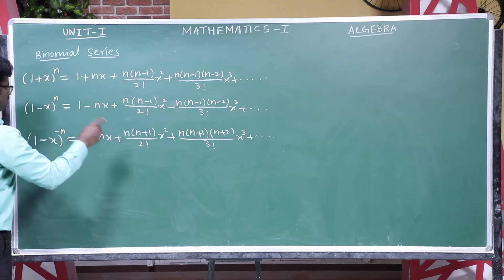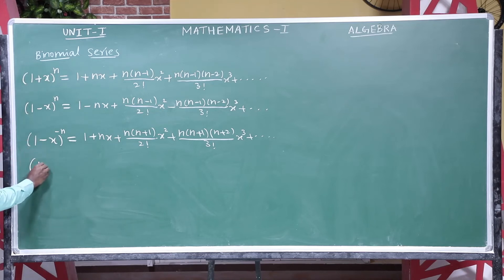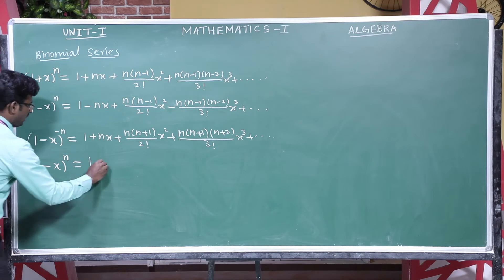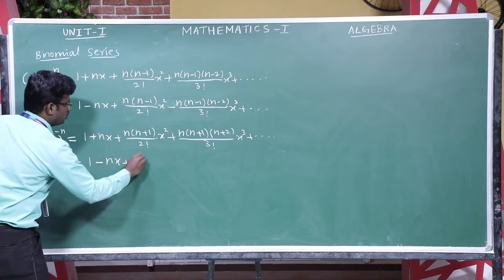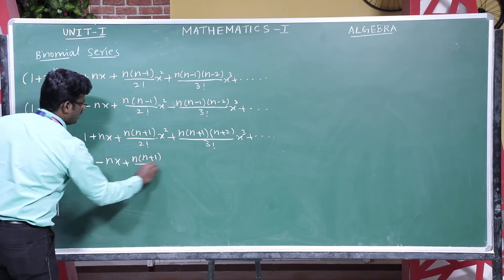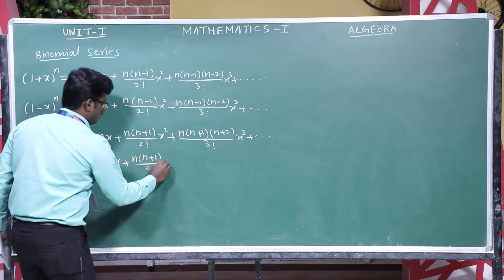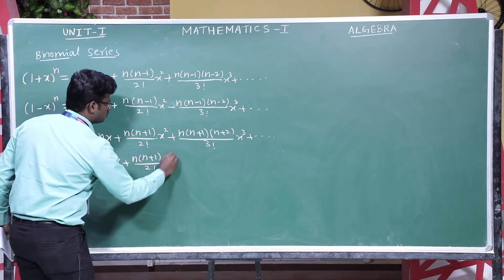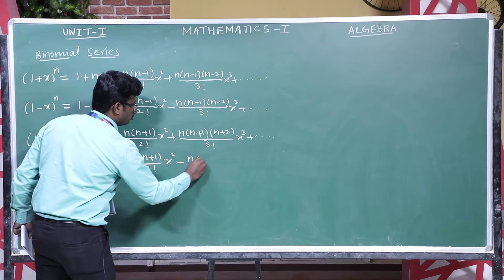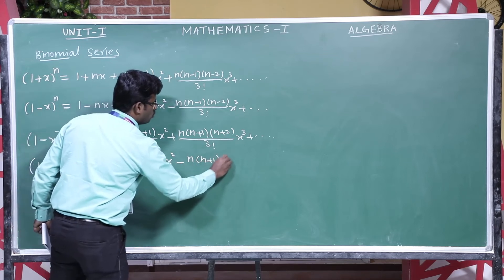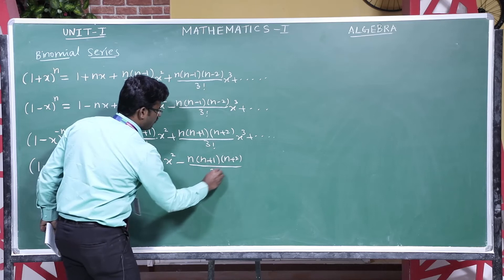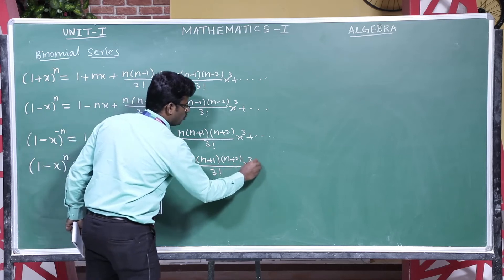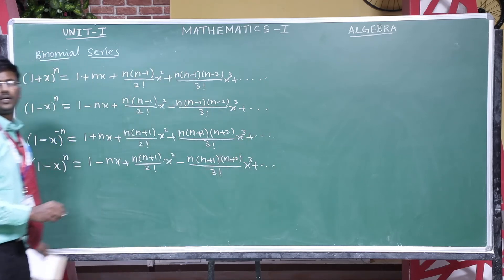Then (1 − x) whole to the power n equals 1 minus nx plus n(n+1) divided by 2 factorial times x squared, minus n(n+1)(n+2) divided by 3 factorial times x cubed, and so on.